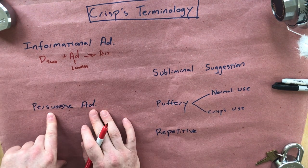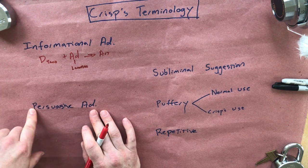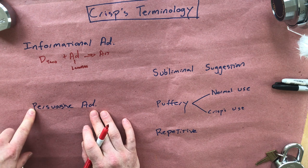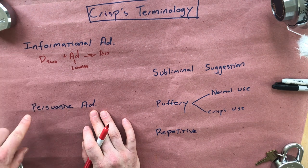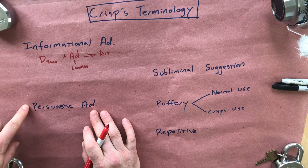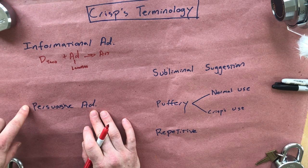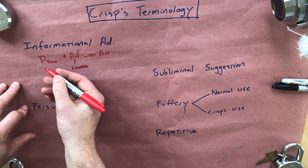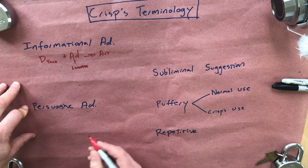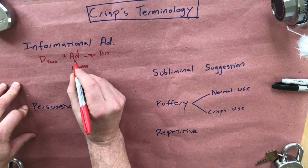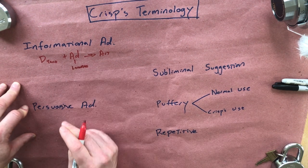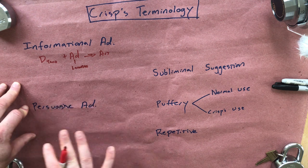What we really care about is this other category: persuasive advertising. While informational ads tell you how to satisfy your pre-existing desires, persuasive advertising is the more important category — the one that he's worried about. It's not operating by giving you information; it's doing something else.